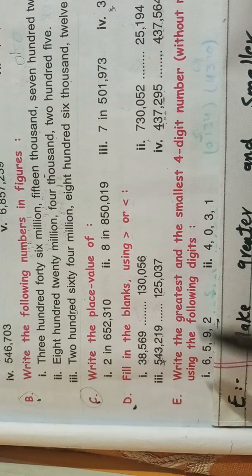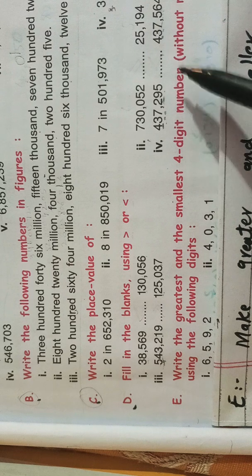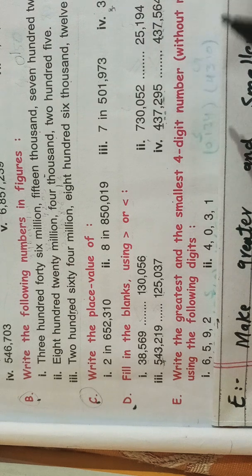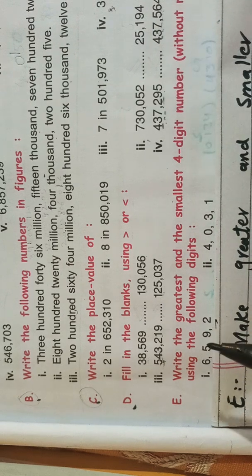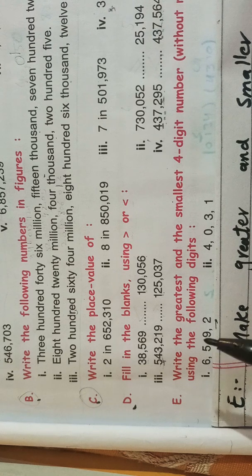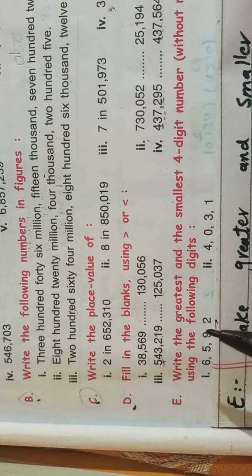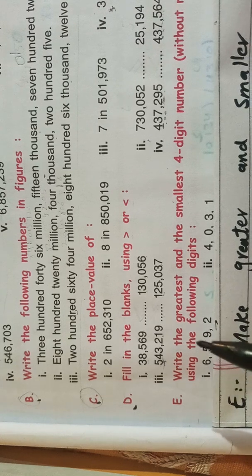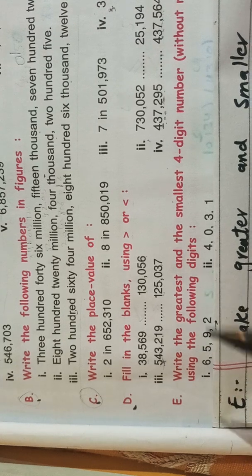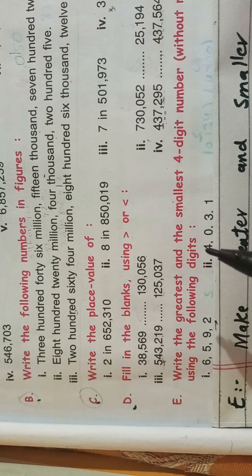We have to use these digits, and the second condition is without repeating a digit. For example, if we have digits like five and six, we have to use each of them to create a smaller number and a greater number. So let's solve them — we start with question number one.